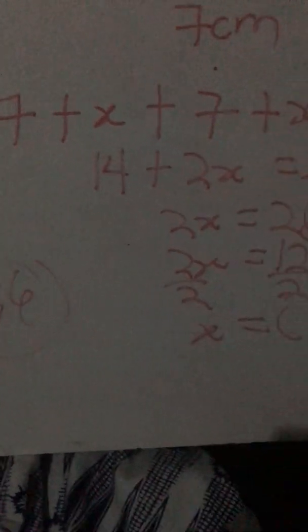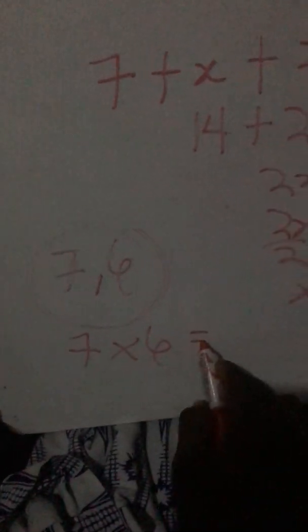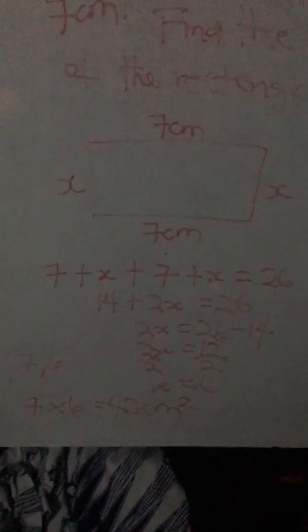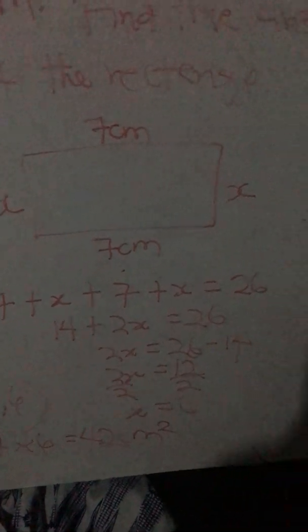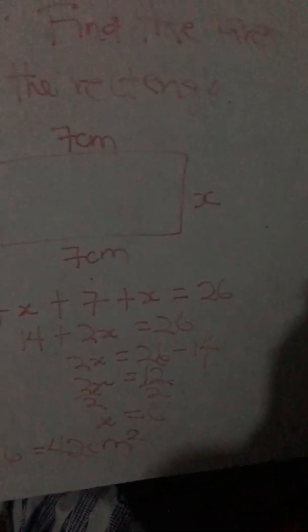With both sides known — seven and six — we find the area: length times breadth is seven times six, which equals 42. Since we are multiplying two centimeter measurements, the unit becomes centimeters squared. So the area of the rectangle is 42 centimeters squared. Whenever you get a question like this, make sure you find both sides of the rectangle first, and then you can find either the perimeter or the area.